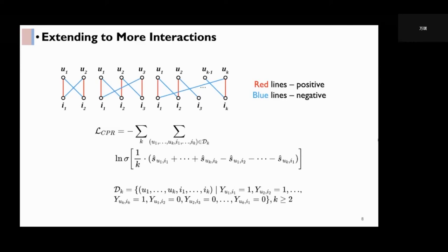The red lines denote positive pairs and the blue ones are negative pairs. We make sure these users and items can form K positive pairs and also K negative pairs. And then we take the sum score of all positive pairs and the sum score of all negative pairs, compute their difference, scale its value by dividing it by K, and compute the CPR loss. It can be proved in a similar way as before that this loss function is still unbiased.